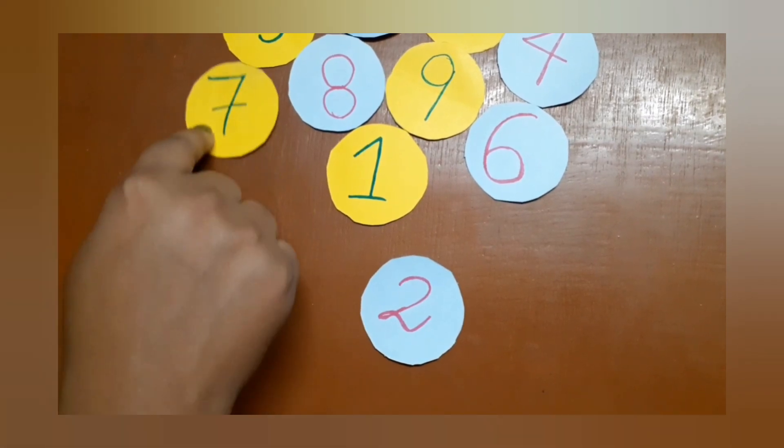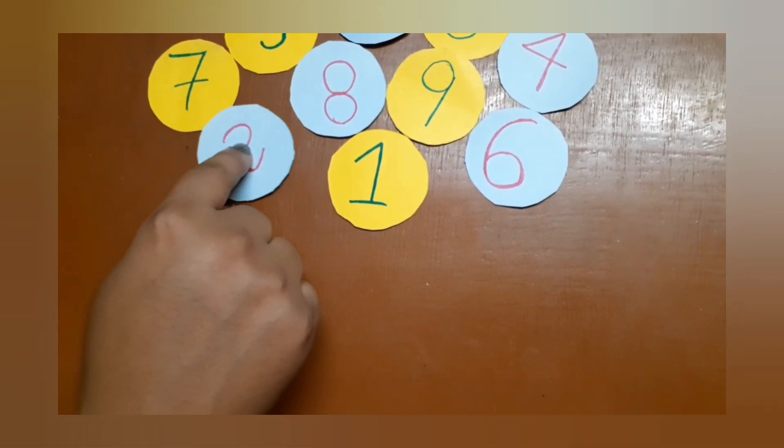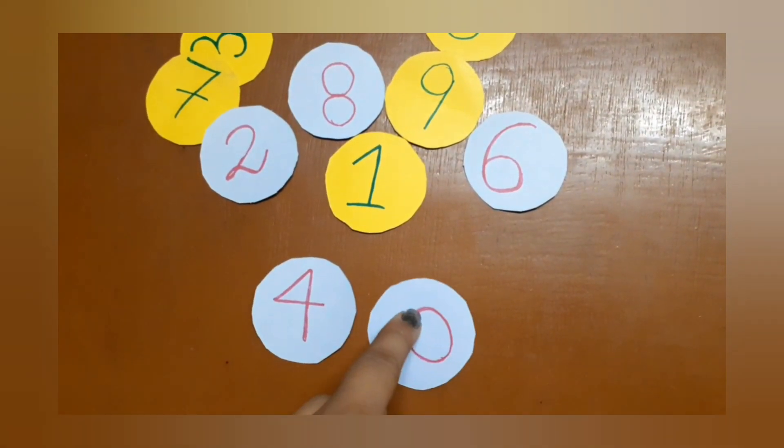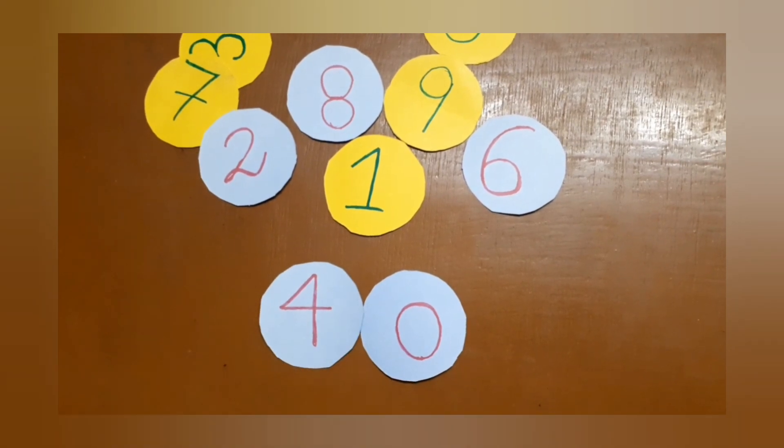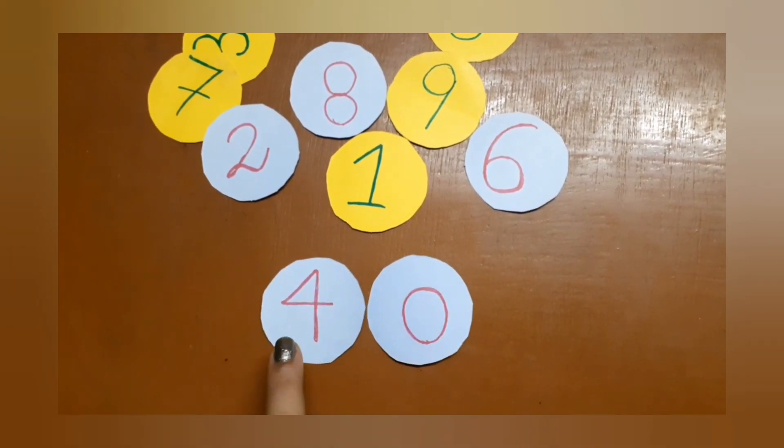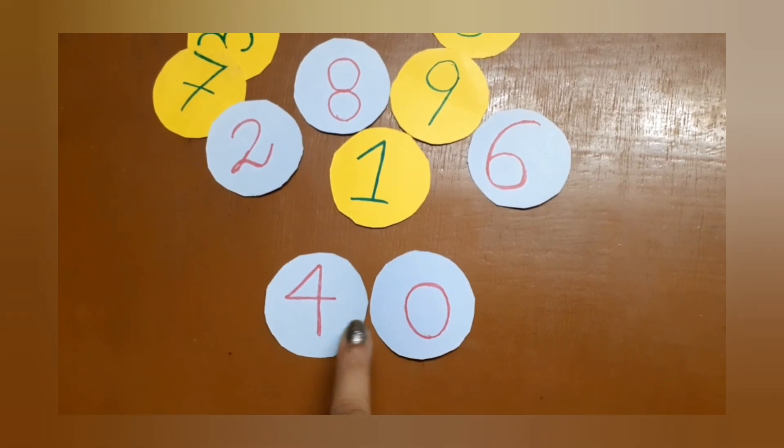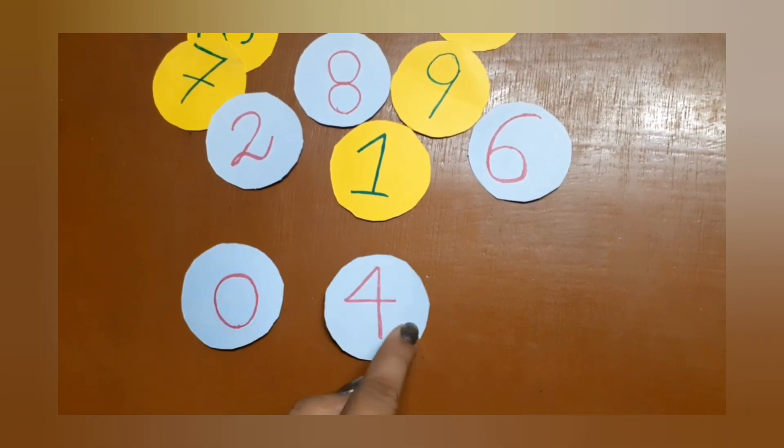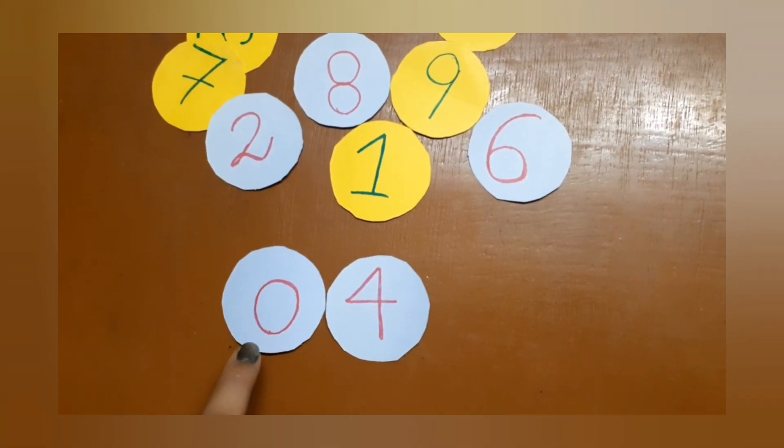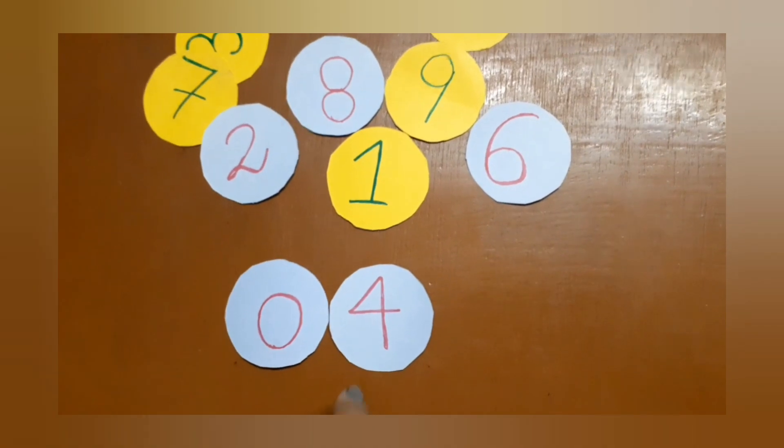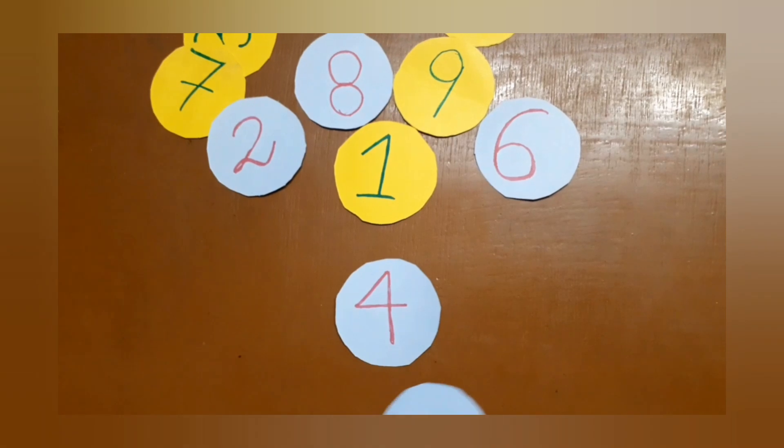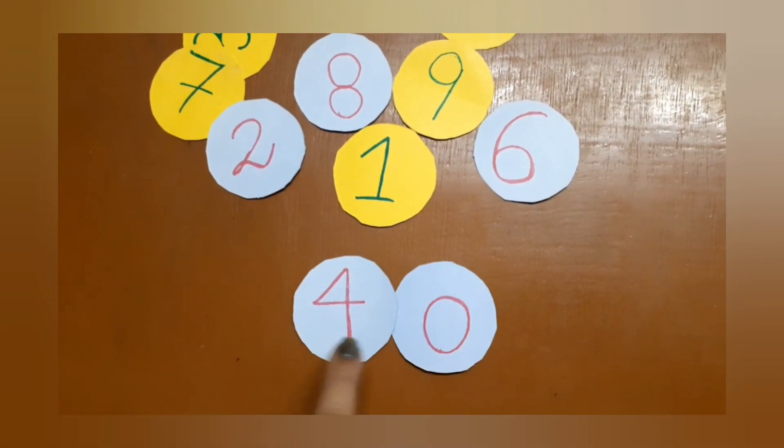Now let's look for some other numbers. Let's take this four and zero. I told you we are going to make two digit numbers, so four zero is forty. But if I put zero before four, it will become a one digit number. So do not write zero before, it will come after this four. Four zero, forty, it is a two digit number.